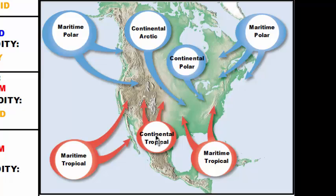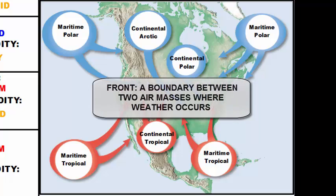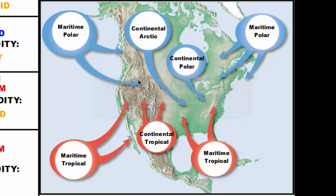When these air masses form in their areas called source regions, they don't stay there for very long. They like to move, and when air masses move across the oceans and over the lands, sometimes they collide and hit one another, and as a result we get these things called weather fronts.